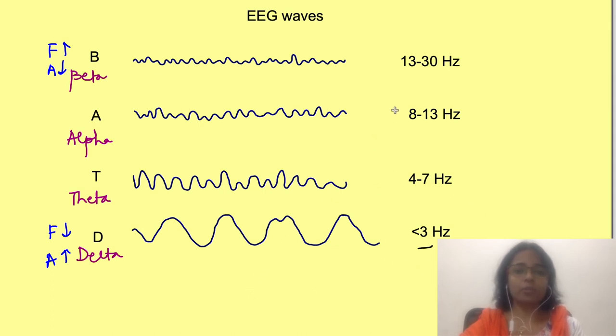As already told, desynchronized EEG waves with high frequency signify active and alert state, while synchronized means decreased arousal. Beta waves are seen while we are awake, alert and concentrating on something, and are most often recorded from frontal regions of the brain.